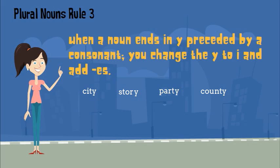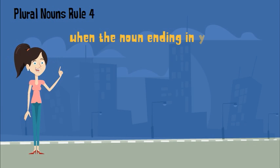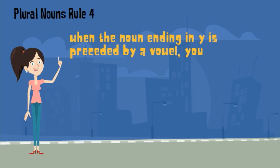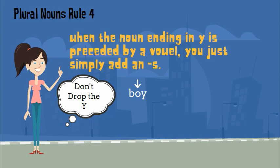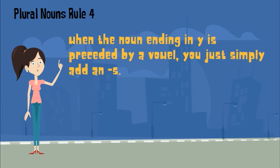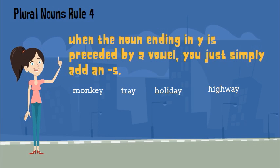Notice there is a consonant right before each Y, so to make them plural, I would drop the Y and add IES. Another rule is applied when the noun ending in Y is preceded by a vowel — you just simply add an S. For example, the word boy ends in Y but has a vowel before it, so you would not drop the Y and add IES. Instead, you just add an S and the plural will be boys. Here are some examples: monkey, tray, holiday, highway — to make them plural, I would not drop the Y and would add an S at the end.